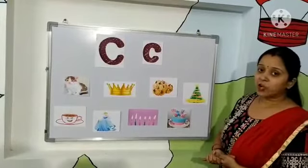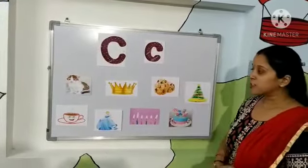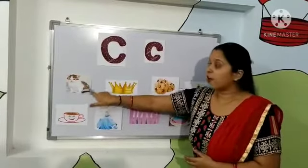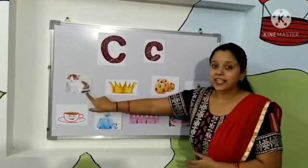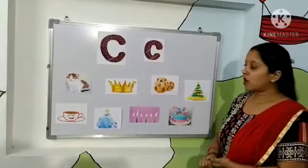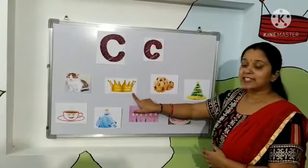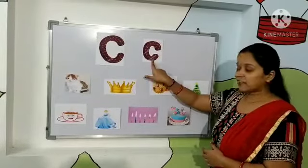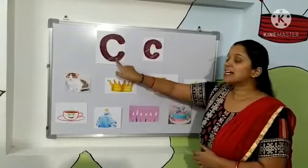Kids, let's see the objects that start from letter C. The first picture is a cat — C for cat. Cat starts from letter C. Let's see the other one. What's this, kids? Yes, this is a crown. C for crown. Crown starts from letter C.